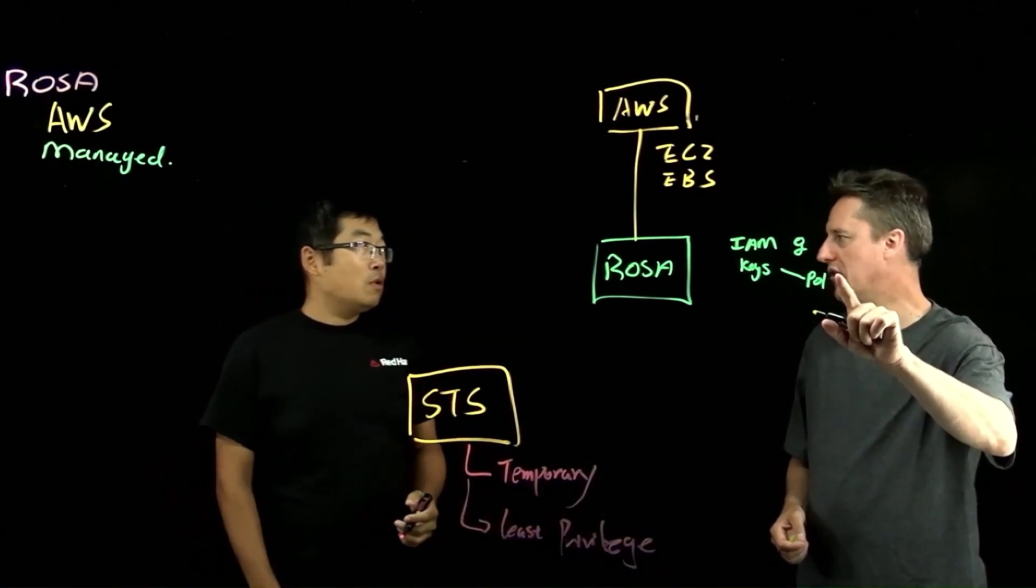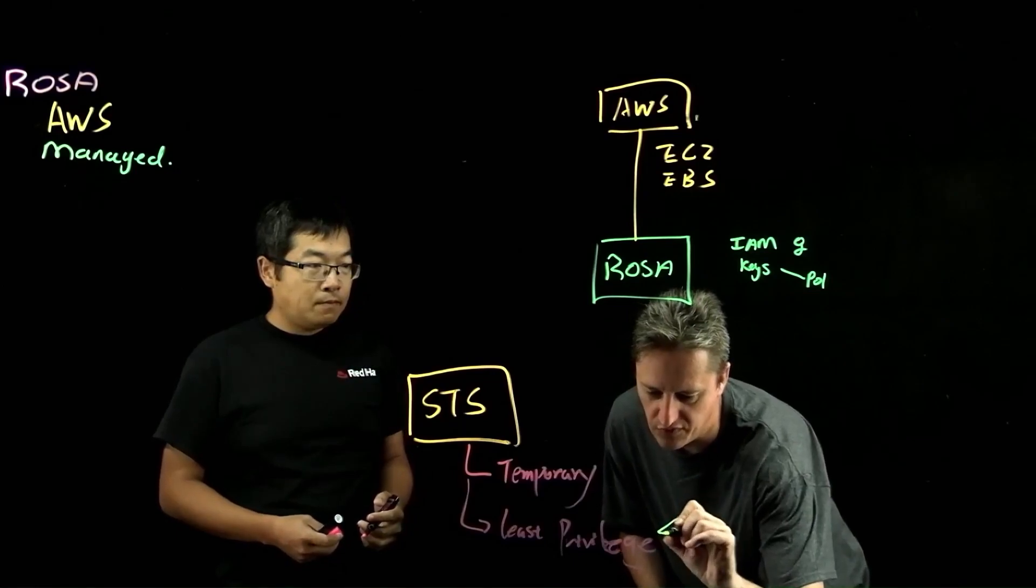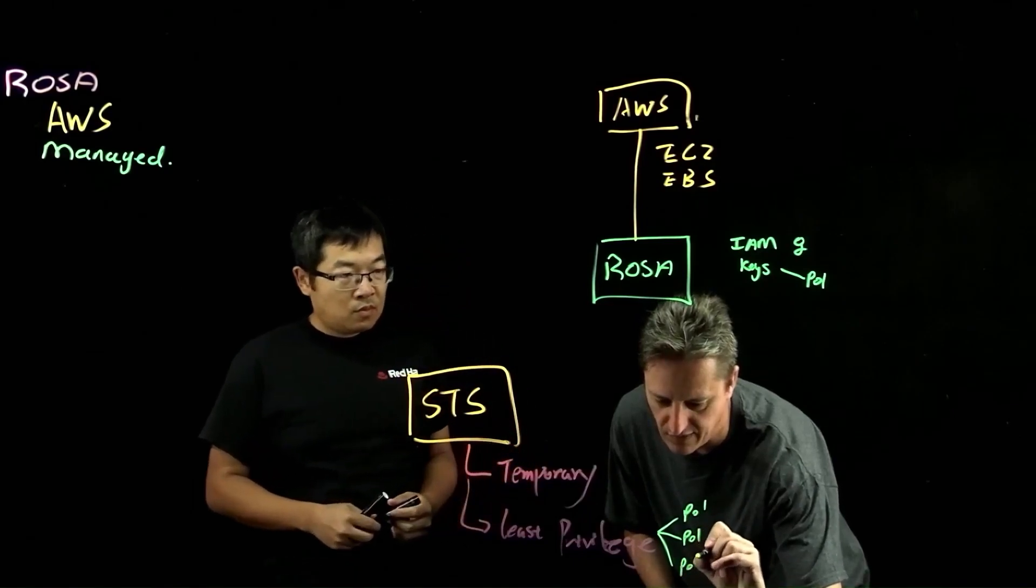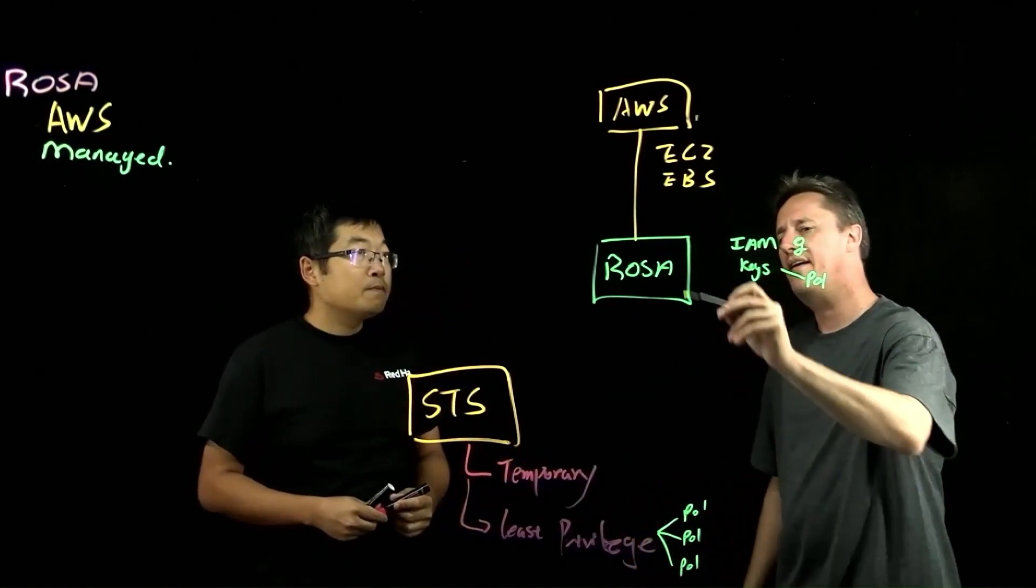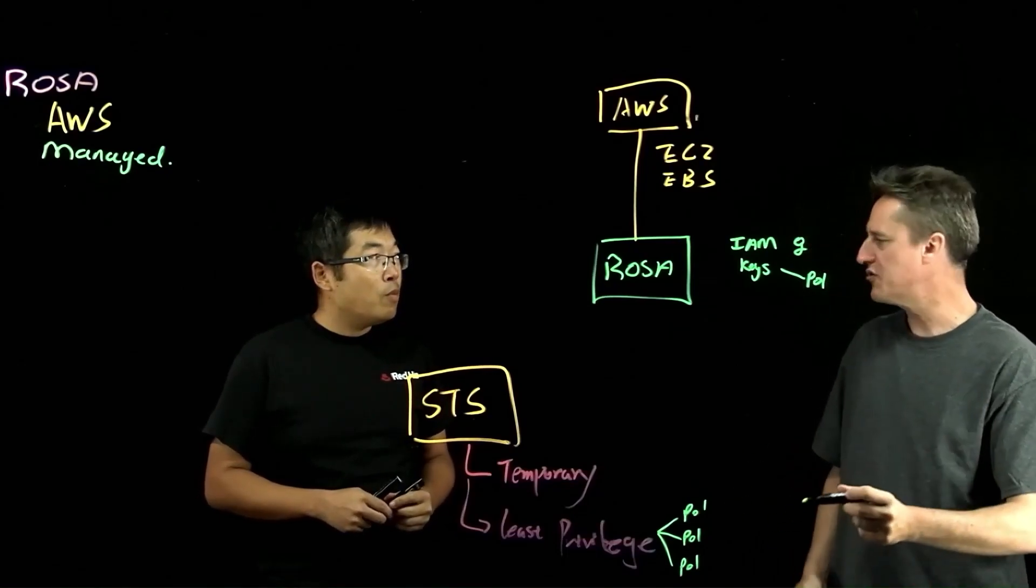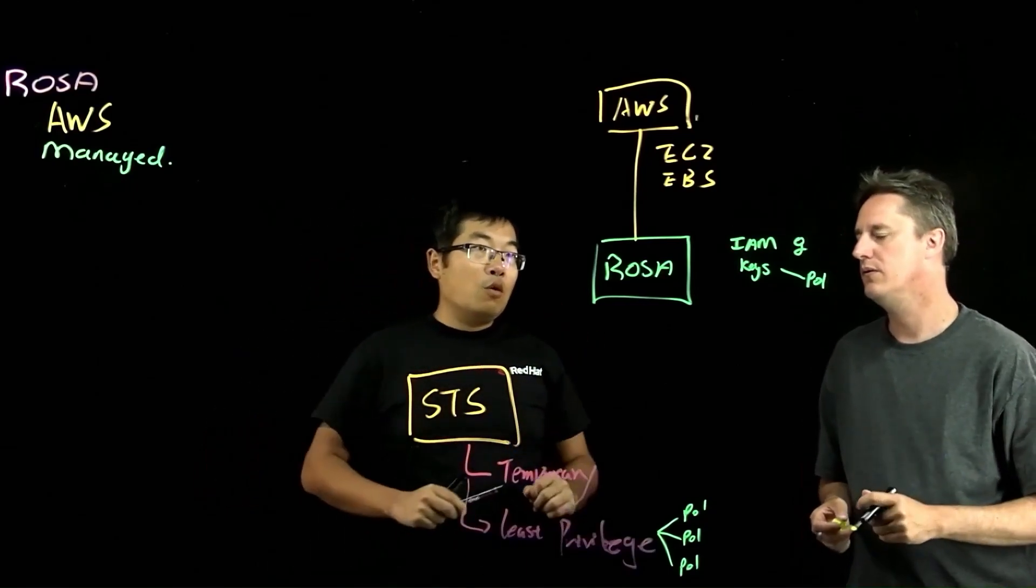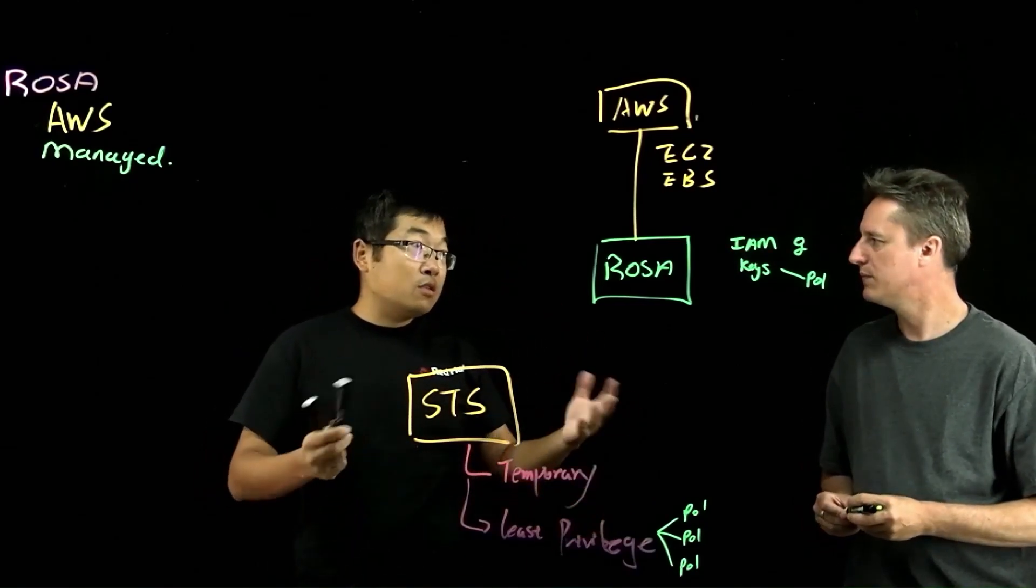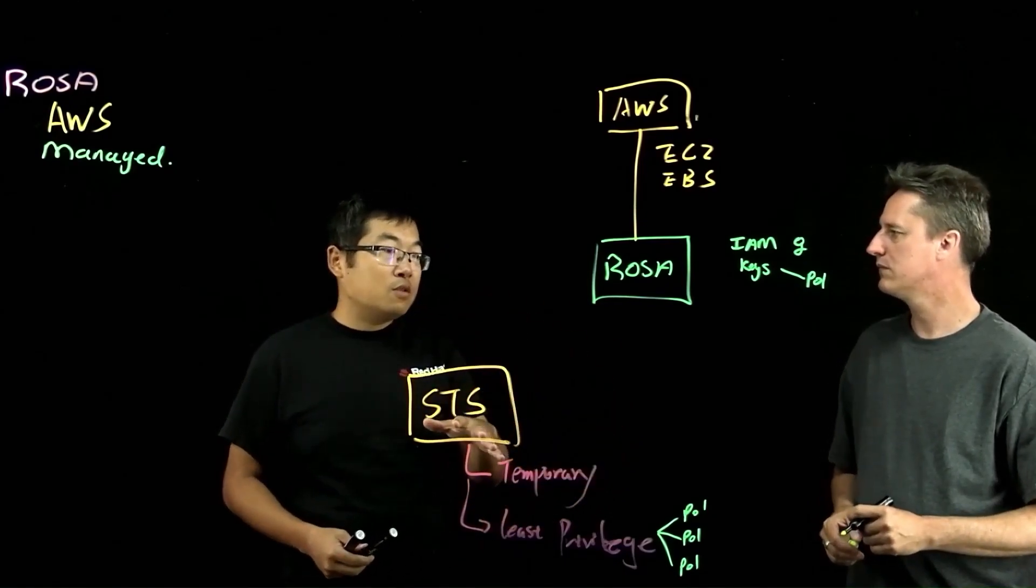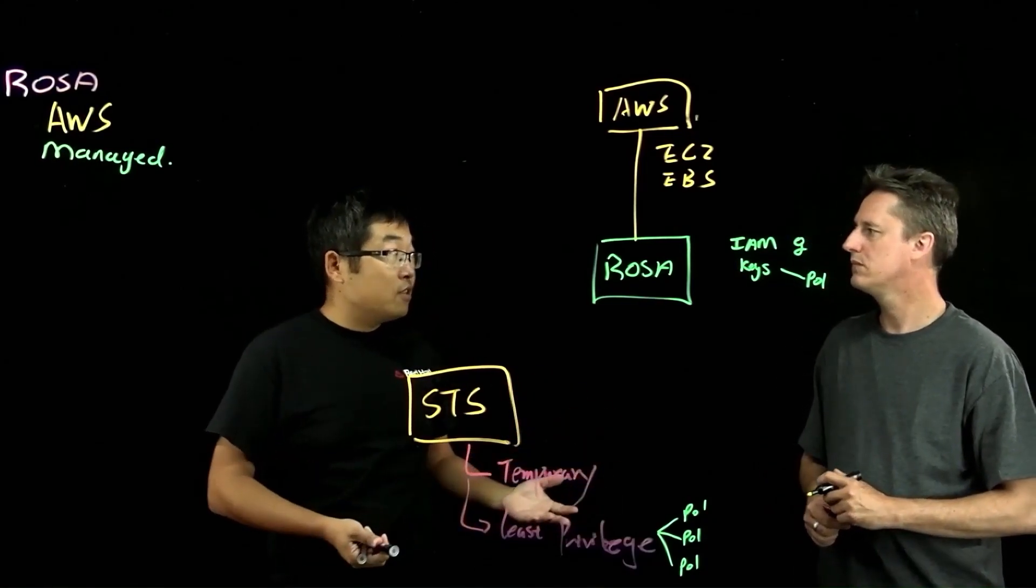So instead of one policy on the older implementation, here we would see multiple policies. And would I be correct in saying that now inside OpenShift, each of the components of OpenShift gets its own specific policy? So inside OpenShift, there are different kinds of operator services. So each service is going to have their own role with least privileged policy.